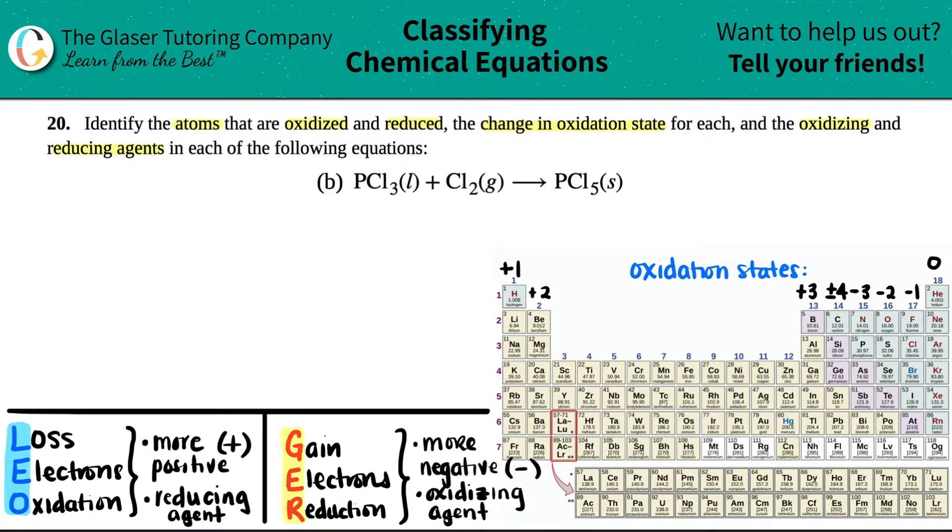So what I'm going to do is I'm going to just find out the individual charges for each atom. So I'll find the charge for phosphorus, chlorine, chlorine, phosphorus, and chlorine, and then we will be able to answer all the questions. So I'm just going to do the work over here. I'm going to work from left to right. So the first compound is PCl₃. And remember, when we have a compound, there's definitely some charges or oxidation states.